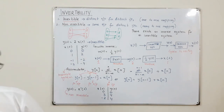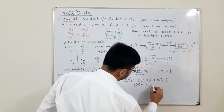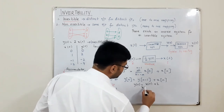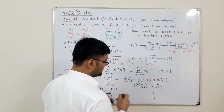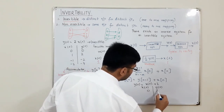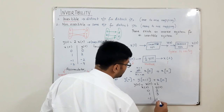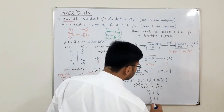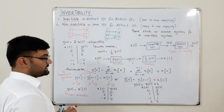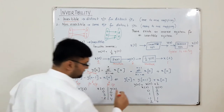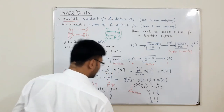Next example: y(t) = x(t) + 2. Making a table: for x(t) = 0, output is 2; for x(t) = 1, output is 3; for x(t) = -1, output is 1. You have different values of outputs for different values of inputs, which means this system is an invertible system.